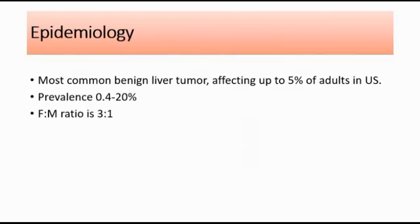For the epidemiology, it is the most common benign liver tumor that affects up to 5% of adults in the U.S. The prevalence of liver hemangioma is 0.4 to 20% of the population, and the female to male ratio is 3 to 1, which means females are 3 times more likely to have liver hemangioma compared to males.